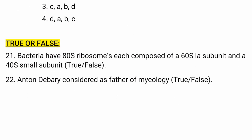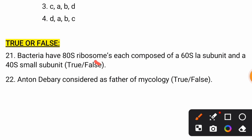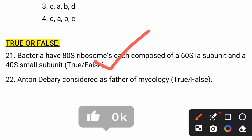Moving to the true or false category. Statement: Bacteria have 80S ribosomes, each composed of 60S and 40S subunits. This statement is false. Bacteria actually have 70S type ribosomes, composed of a 50S large subunit and a 30S small subunit. That is why this statement is false.